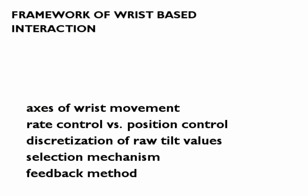We propose a framework for tilt-based interaction that identifies five main factors that can influence performance. These are the axes of wrist interaction and their range of motion, the method of control — rate or position based — the discretization of raw tilt sensor values, the selection mechanism, and the method of feedback.